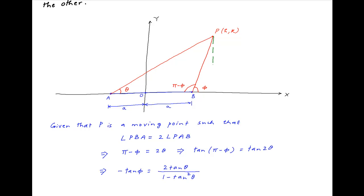Now going back to the figure, let's drop a perpendicular from the point P onto the x-axis and let the foot of the perpendicular be the point N. The vertical distance of the point P from the x-axis is equal to k and the horizontal distance of the point P from the y-axis is equal to h.